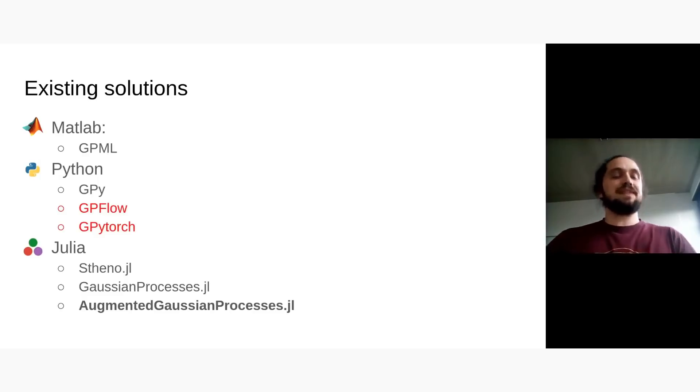So what exists right now, citing the biggest packages: in MATLAB is the original GPML. In Python, it was converted into GPy. And I would say the most popular ones right now are GPFlow and GPyTorch, which most research papers use right now.